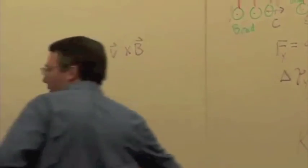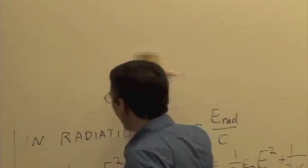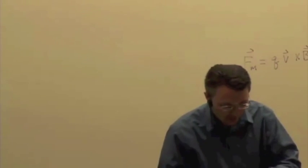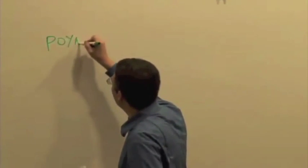There's a way to quantify this, and we're not going to do too much with this, but you should see this just in case you run into it in later applications. The relationship or a way to sort of quantify or encapsulate how energy and momentum are stored in electromagnetic fields is with something called the Poynting vector.